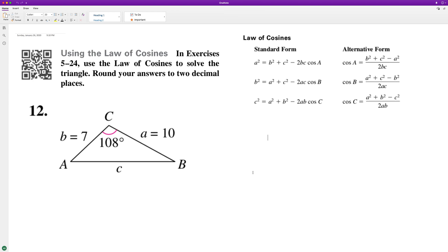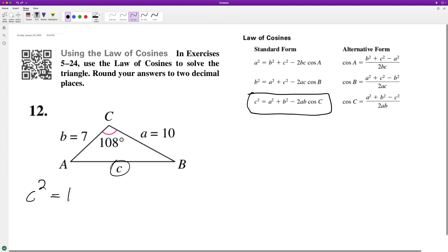Okay, so we can start off with our standard form here. C squared equals A squared, or 100, plus 49 (that's 7 squared), minus 2 times 7 times 10 times the cosine of 108 degrees.